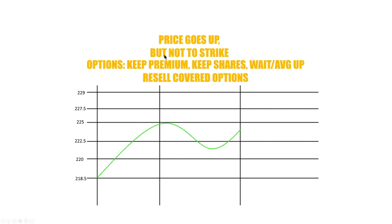Scenario two: the price goes up but not all the way to the strike price. In our example, the unit price is $218.50 — it goes up, hits $225 intraday, but on the expiration date it closes at say $224, just below the $225 strike. Those options expire worthless, but we still keep our $10 premium, we keep our 100 shares, and we can wait before averaging up. Once the next month comes, we can continue to resell covered calls — now priced at $223-$224, we might write calls at $225 or $230.